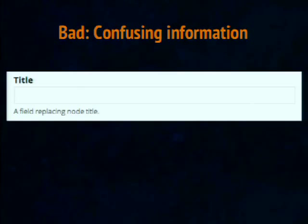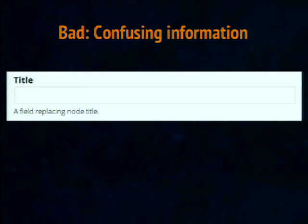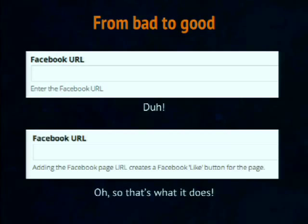Here's an example of really bad help text: we were using the Title module, and the help text it came with was just confusing technical description of the title field — the developers just didn't change it. If a client saw that, they'd probably call you and say 'what does this even mean?' Another common mistake: a Facebook URL field with help text that just says 'enter the Facebook URL.' Anyone knows that. But better help text would say 'adding the Facebook page URL creates a Facebook Like button for the page' — now they know what it does. That's extremely more helpful.